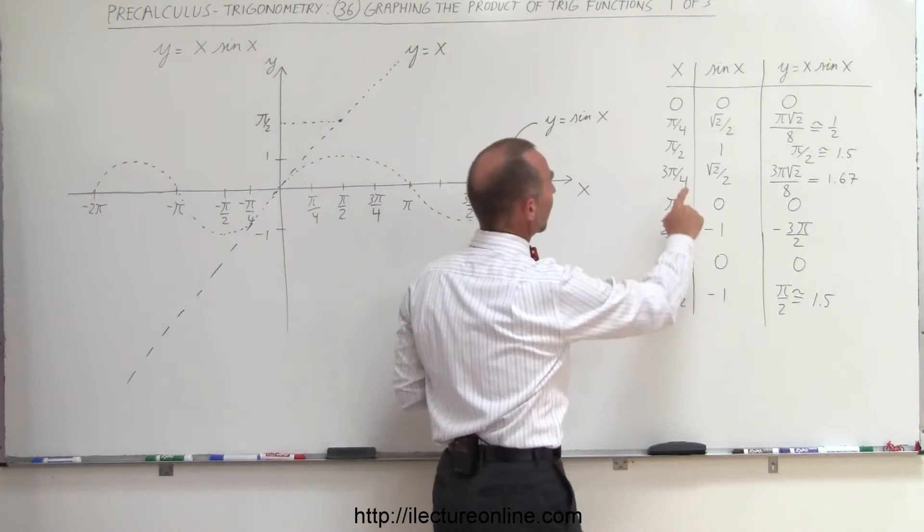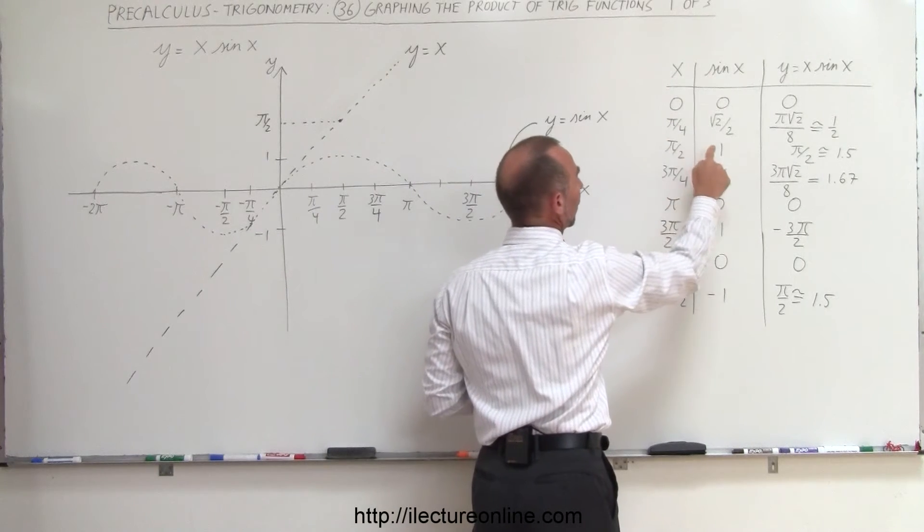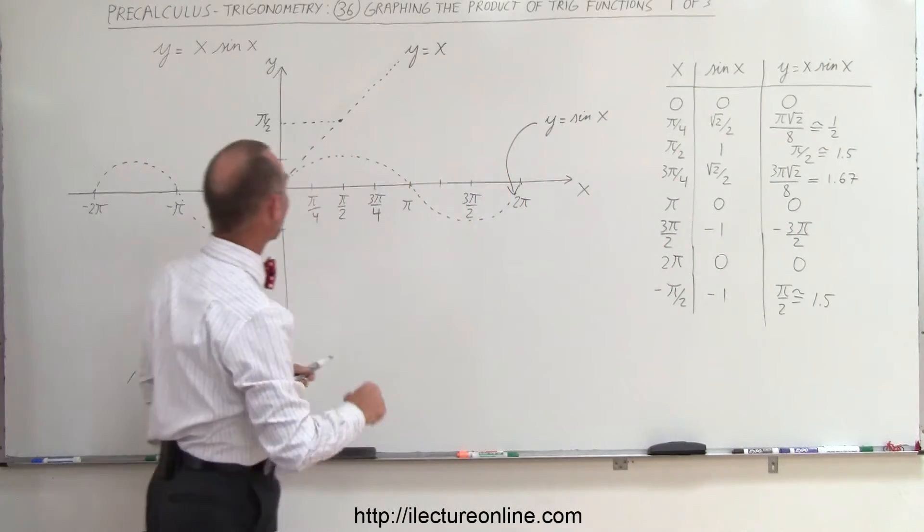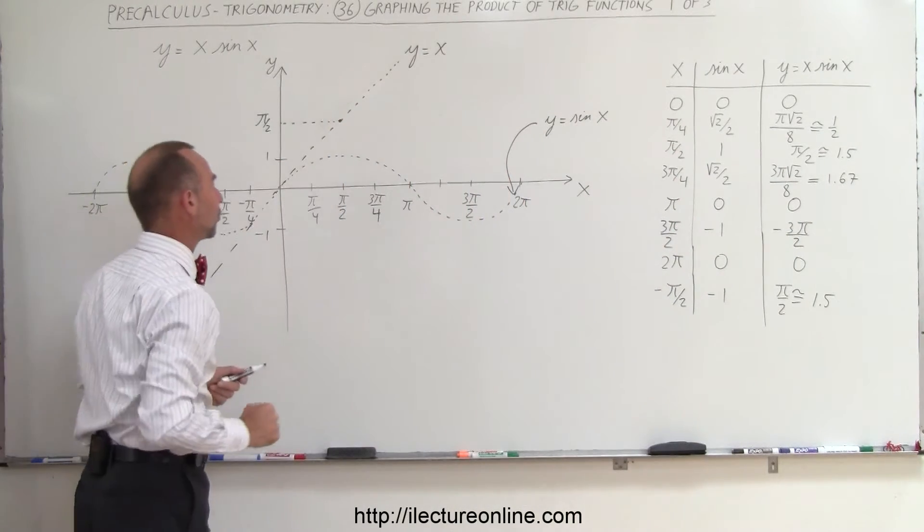And I believe I have that right here. So when x is equal to pi over 2, sine of x is equal to 1, multiply them together, that will be the product, it's about 1.5. And so, then the function will be there.